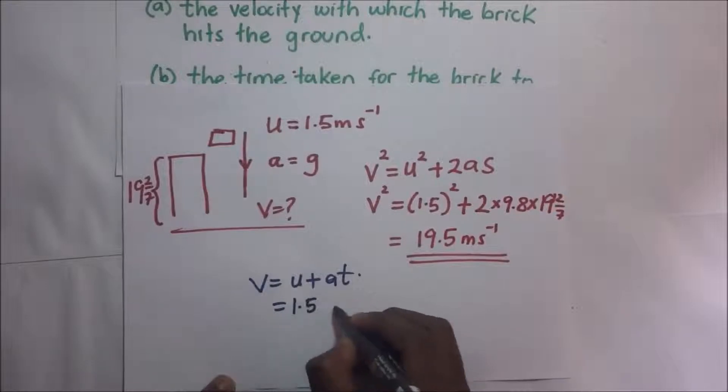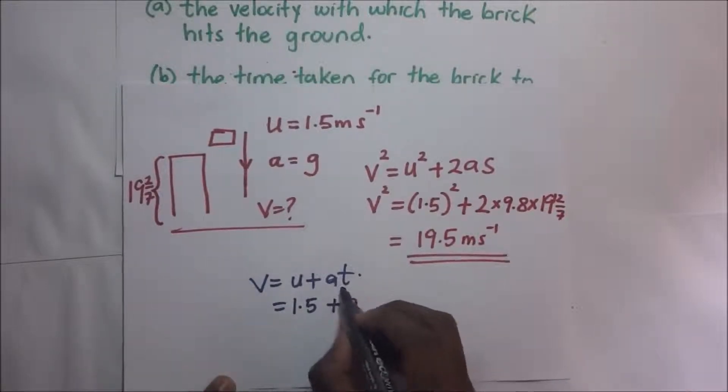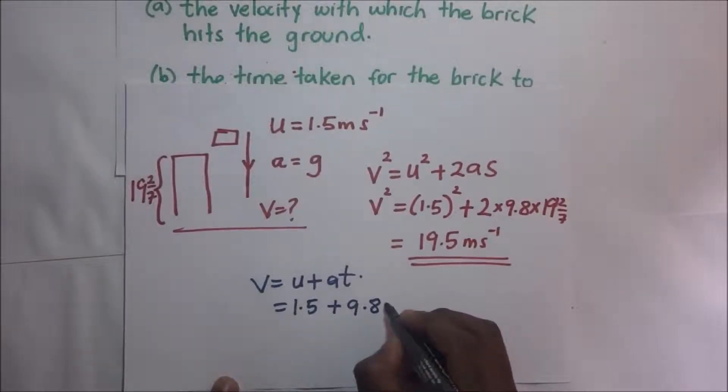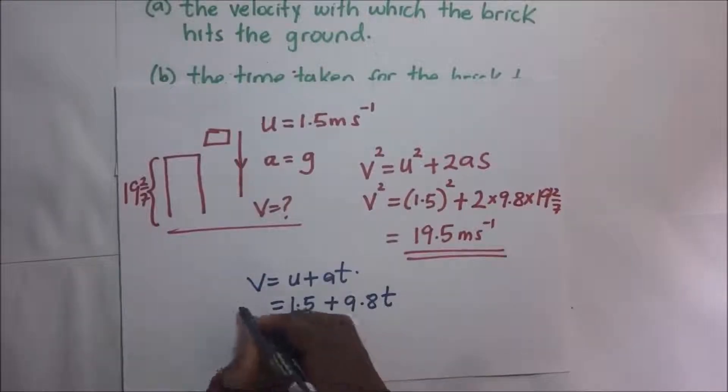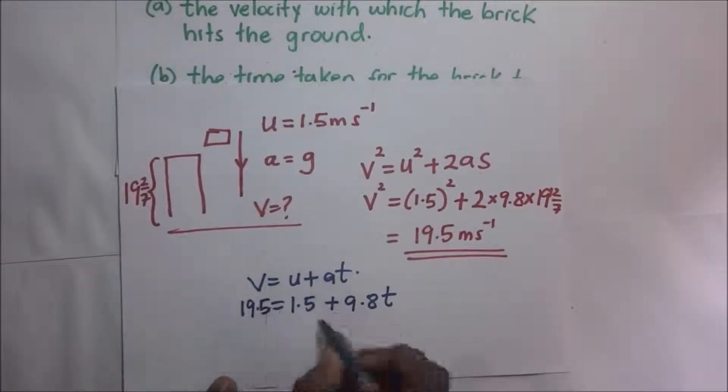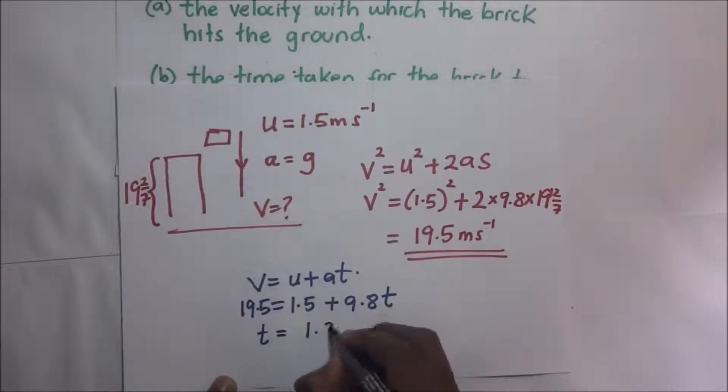1.5 plus our acceleration which is the gravity which is 9.8 times the time which we are looking for. Our final velocity we already got it as 19.5. When we make t the subject of the formula, we shall get our value of time as 1.84 seconds.